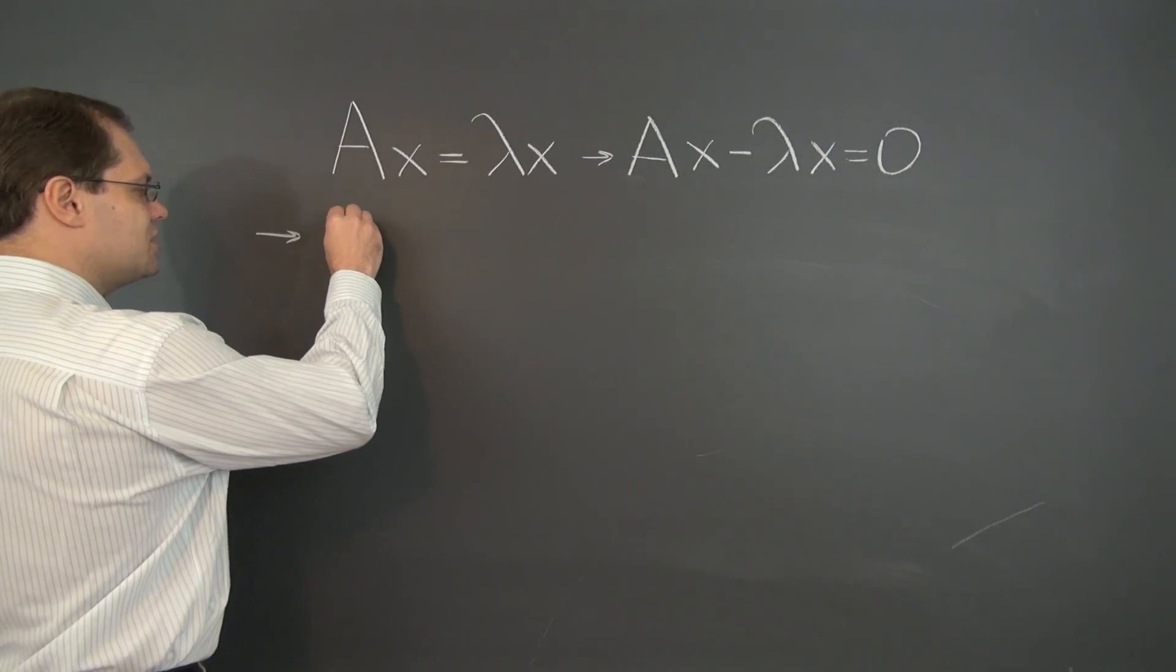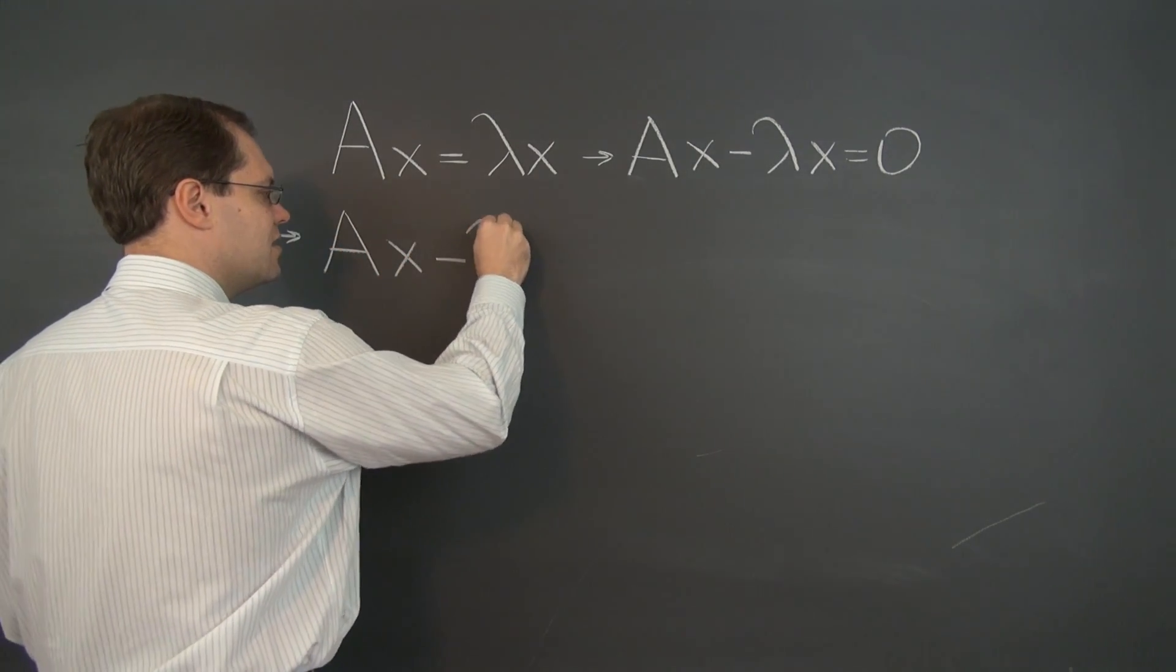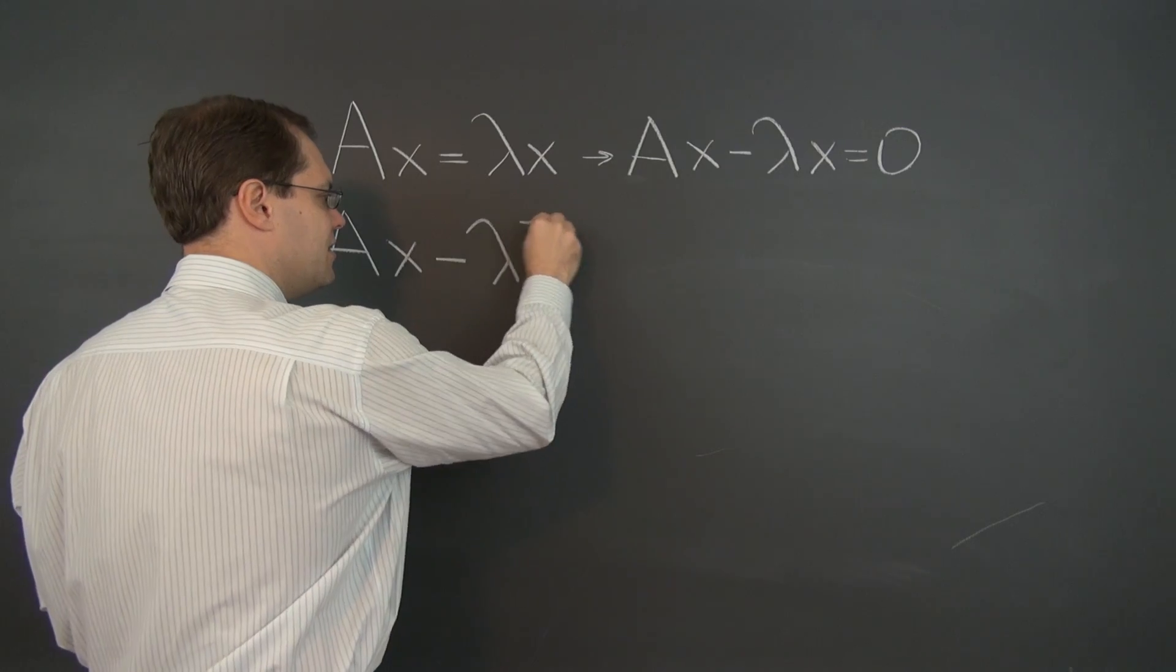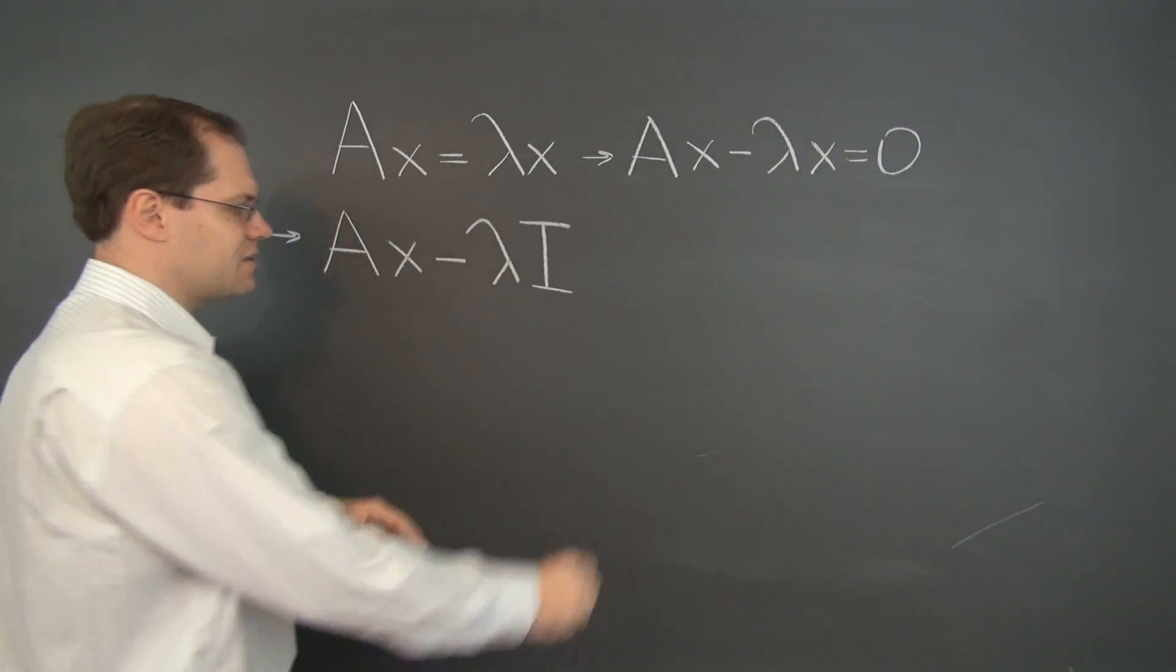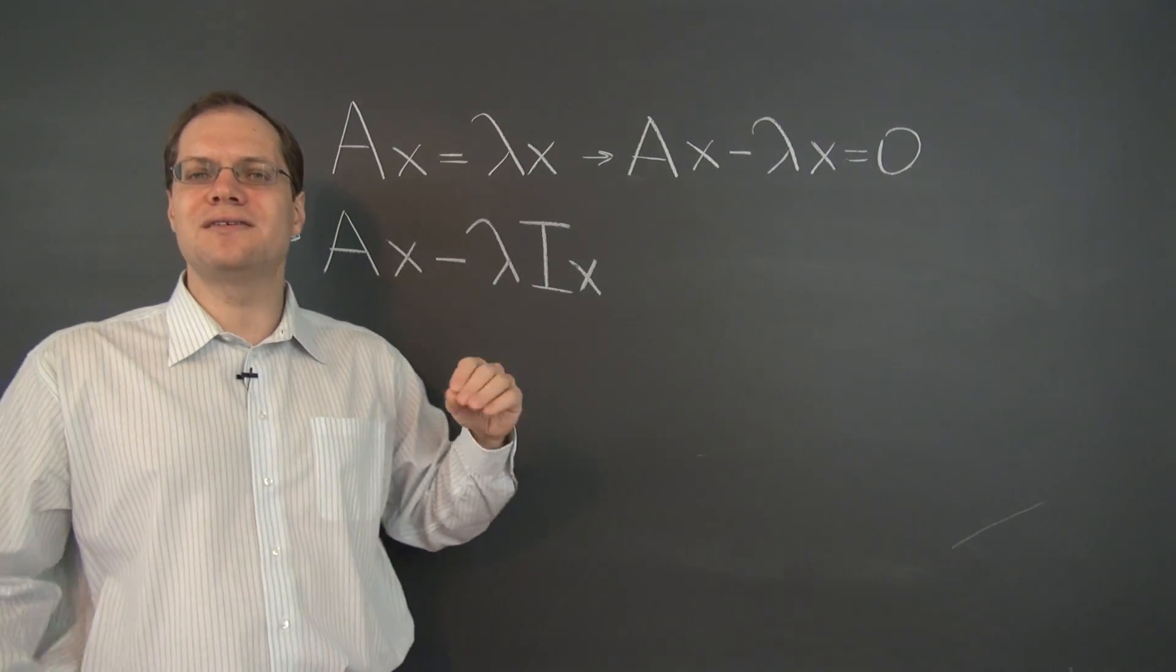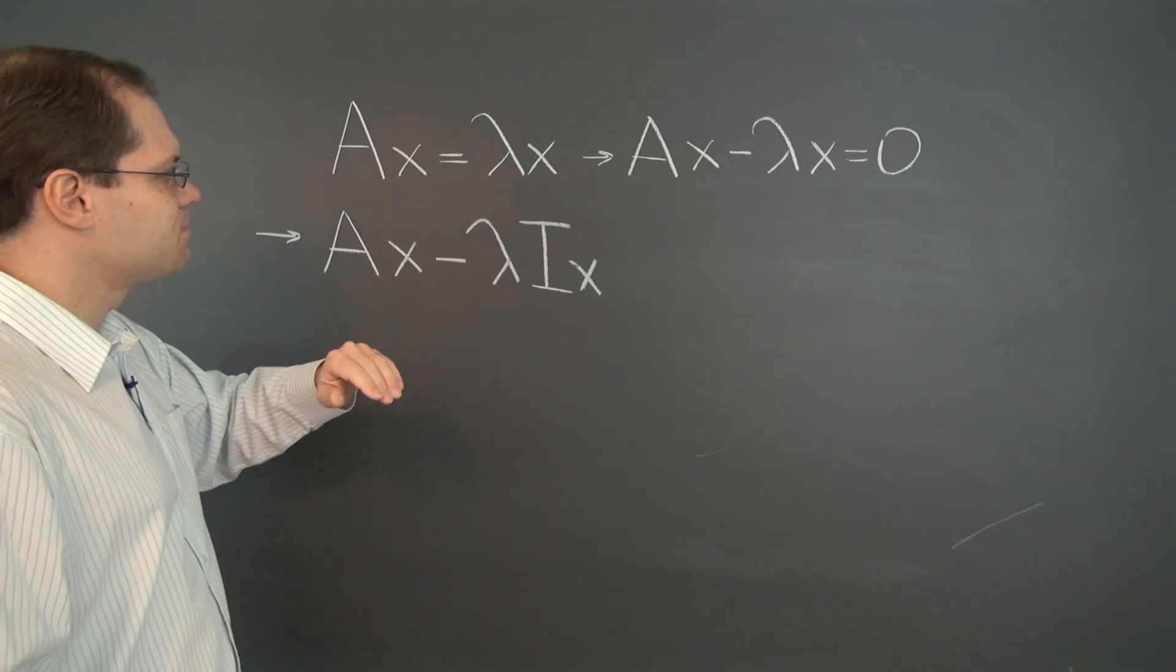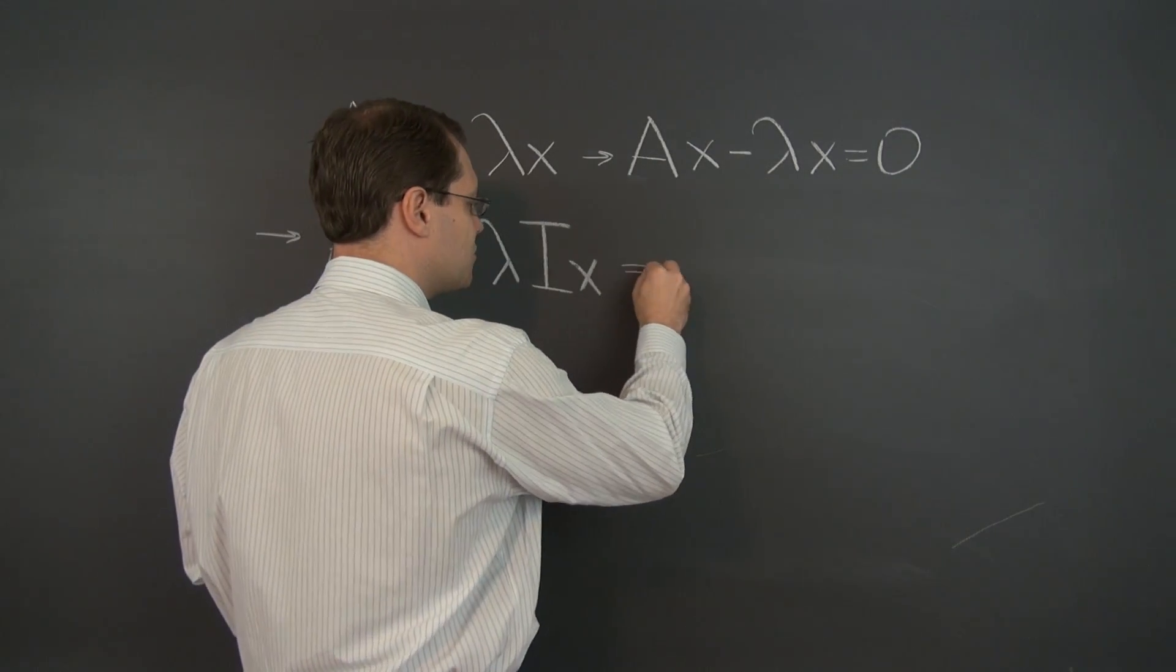We rescue what's going on by converting this number times vector artificially to a matrix times vector by sticking in the identity matrix, which of course doesn't change the value but changes what's really going on. This used to be number times vector, but now we have matrix times vector. You can think of this as an artificial step, and yes it is artificial, but it is very effective.